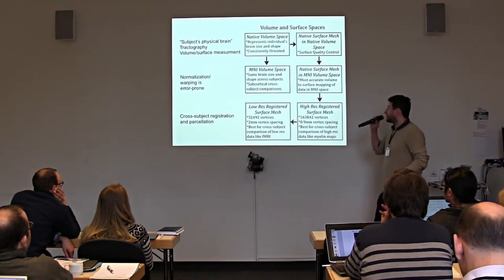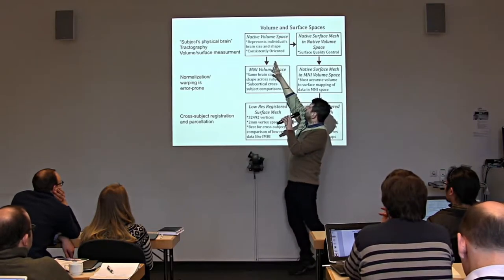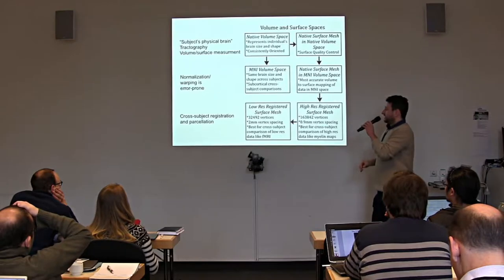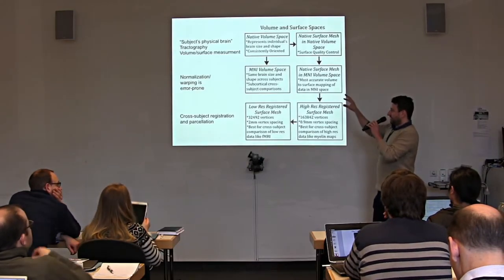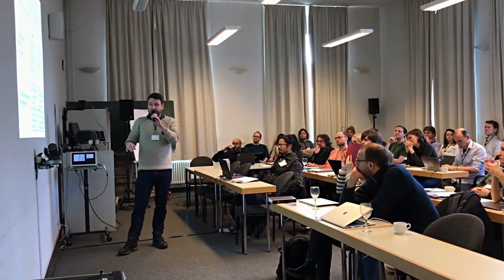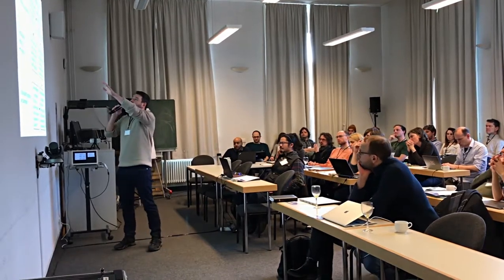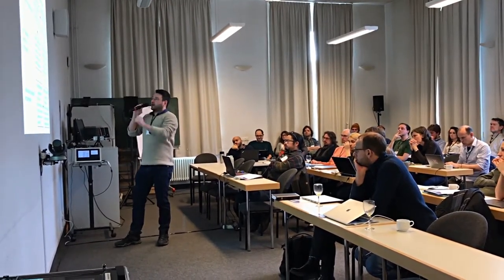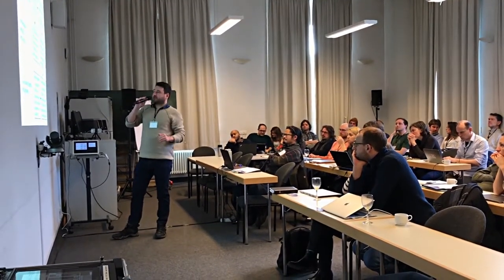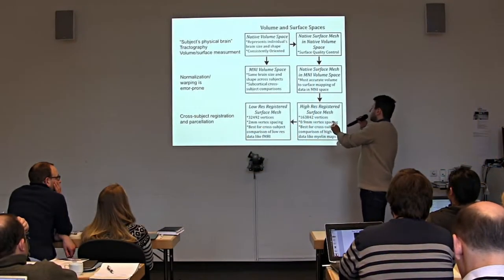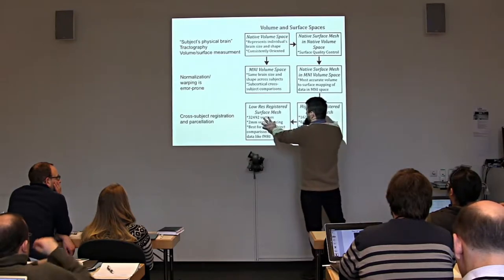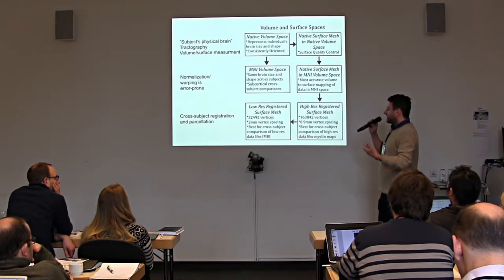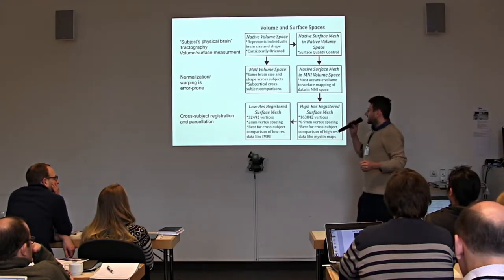We have different volume and surface spaces. The old approach was to go from native volume to MNI volume space, but non-linear image registration is very error-prone and produces a lot of regional misalignment, since warping algorithms are blind to the underlying function of brain areas. Instead, we generate our mesh in native volume space, then go via volume registration to MNI space only for subcortical structures, while our surfaces are registered and aligned in surface space, ending up in a low-resolution surface space that balances high-resolution fMRI information against file size.